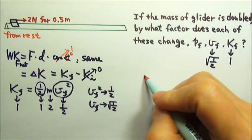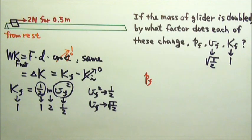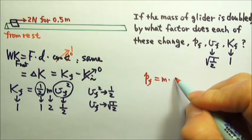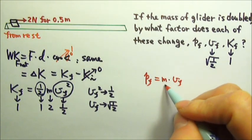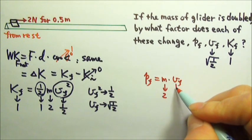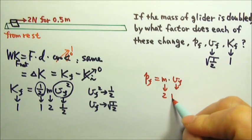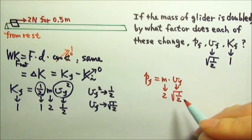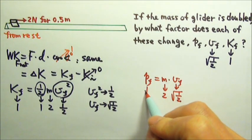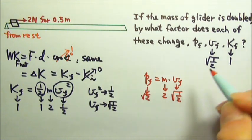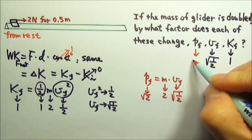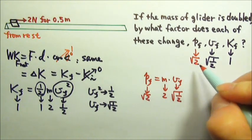Then we want to find the final momentum, which is m times the final velocity. The mass doubles, the final velocity changes by that factor. So if you multiply these two, you get square root of 2. So the final momentum changes by a factor of square root of 2.